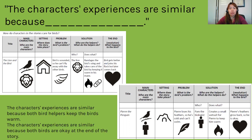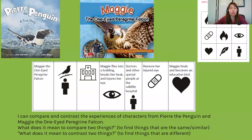So today is going to be an assessment of comparing two stories: Pierre the Penguin and Maggie the One-Eyed Peregrine Falcon. You guys did a nice job telling me about the problem and the solution in Maggie the One-Eyed Peregrine Falcon, and today you are going to compare these two stories.